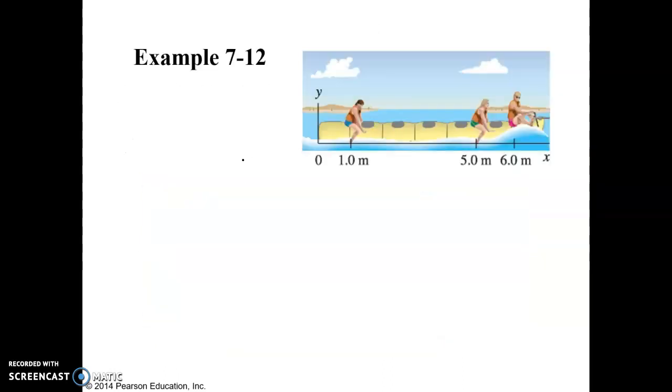Oops, wrong way. We can find that by taking the mass of this person, M times the distance from the back of the boat to that person, 1 times 1.0. Plus this person is 5 meters away from the back of the boat. So that's going to be M times 5.0. And the third person is 6 meters away. M times 6.0. And we're going to divide all of this by 3M. And unfortunately, I'm coming up on my 15 minutes. So I'll have to pause the video here and resume it in the next one.